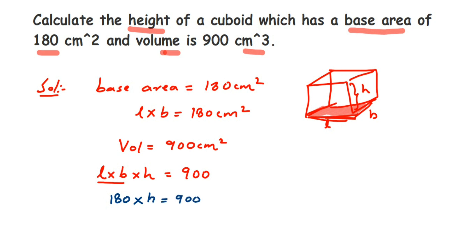I have to find out the value of height, so I'm going to transpose 180 to the other side. So height will be equal to 180 is in multiplication, when transposed comes in division, so 900 divided by 180.